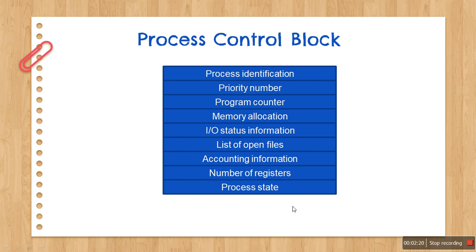The OS initializes the PCB and puts the PCB on the correct queue. The information stored in the process control block includes process identification, which is a unique identifier for a process — it is like a pointer connecting to its descriptor. Then you have the priority number, which is allocated to a process by the operating system, and depending on it, the OS allocates resources. For example, if we use a CPU scheduling algorithm based on priority, we need this priority number to determine which process has higher priority and allocate resources accordingly.